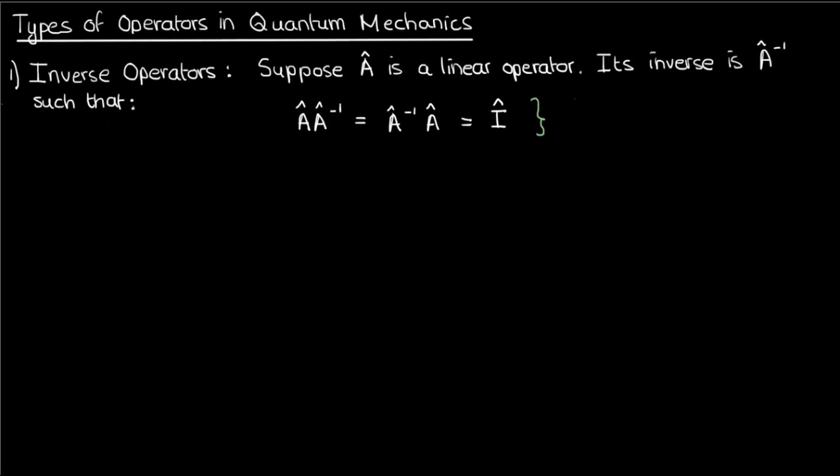Note that the identity operator is like the generalized version of the identity matrix. When it operates on a bra or ket, you get the same bra or ket that you put in originally.